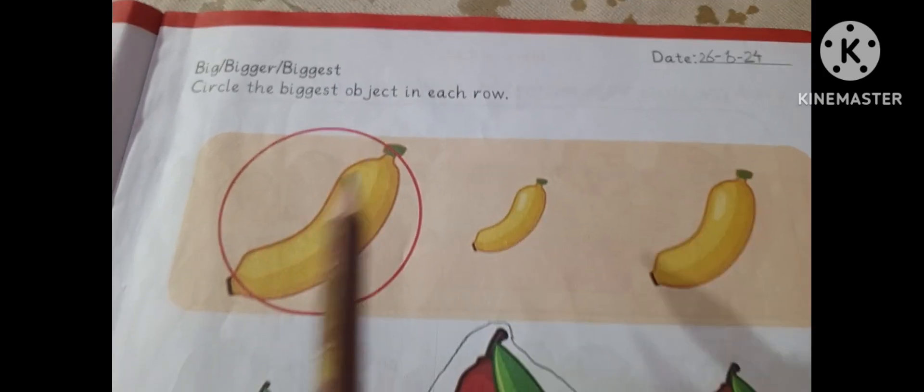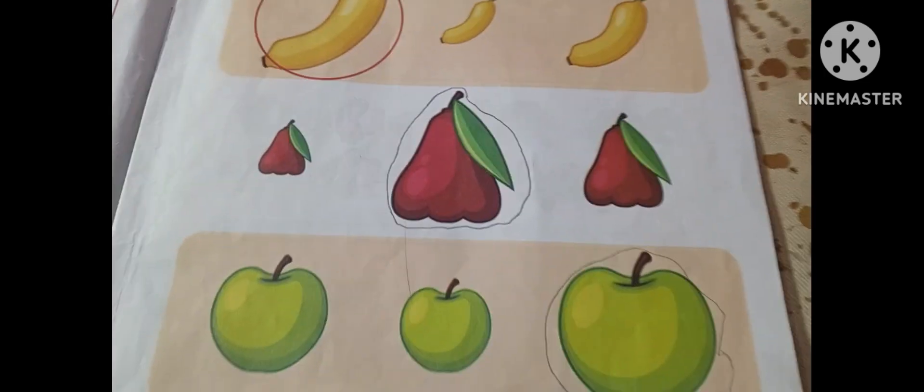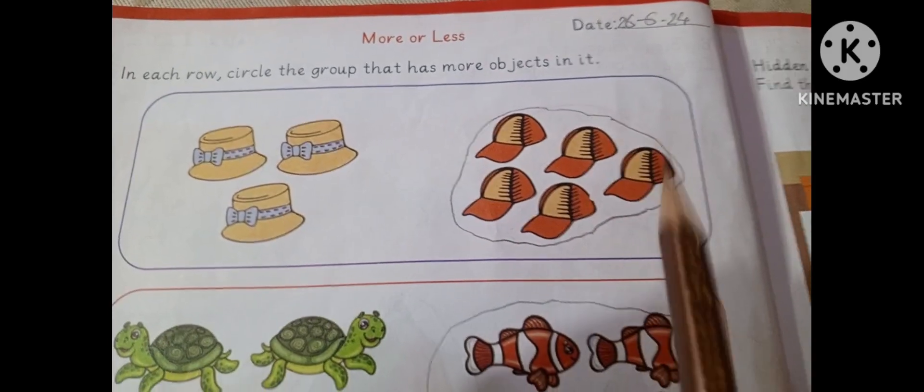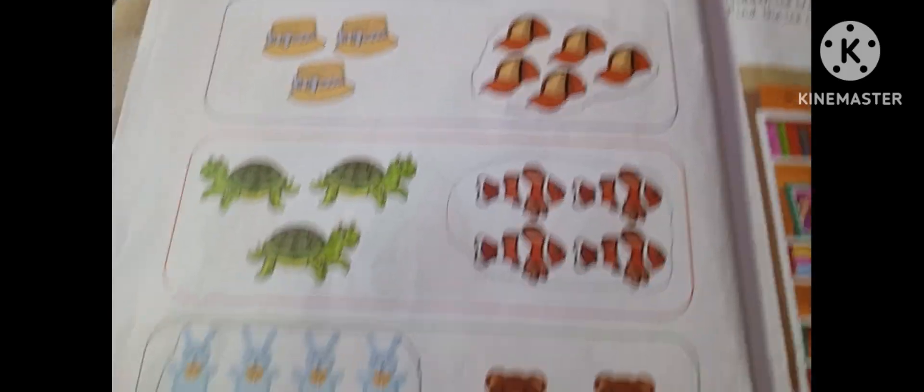Circle the biggest object, which is the biggest, you have to circle it. In each row, circle the group that has more objects.